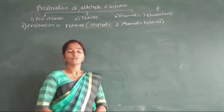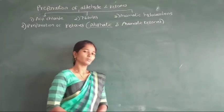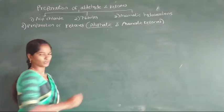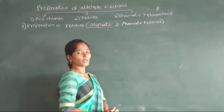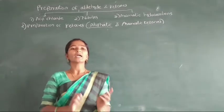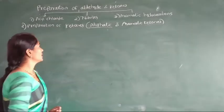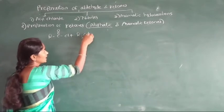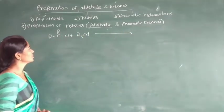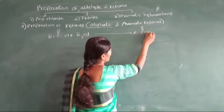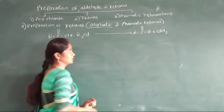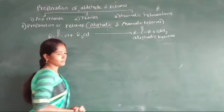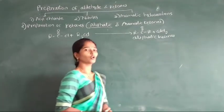Now, second, preparation of ketones from acyl chloride. In this reaction, both aliphatic as well as aromatic ketones are prepared from acyl chloride. First, we see preparation of aliphatic ketones. Aliphatic ketones are obtained by treatment of acyl chloride with dialkyl cadmium. The general reaction: RCOCl reacts with dialkyl cadmium to give RCOR' plus CdCl2, with formation of the aliphatic ketone.